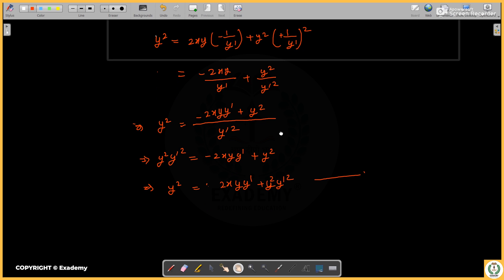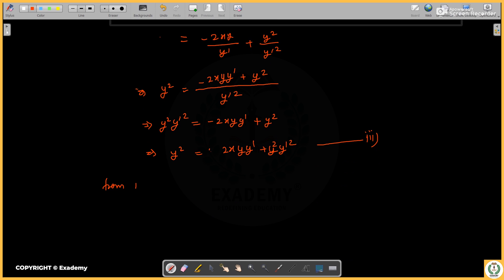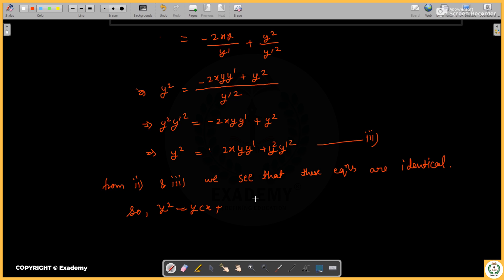I have shown you equation two and equation three. Looking at these equations, we see that they are identical. So comparing with y² = 4cx + 4c², the orthogonal trajectory is the same family. Therefore the family is self-orthogonal.